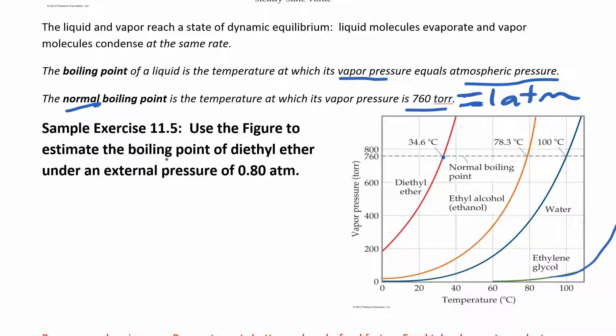So what they want us to do here is use the figure to estimate the boiling point of diethyl ether, but not at the normal boiling point, not at 760 torr, but at 0.8 atm. So atm's not on here, so we're going to have to convert that first. So the first thing you want to do is convert that. So I have 0.8 atm and 1 atm equals 760 torr. So when I work that out, it looks to be about 610 torr. So I'm going to go to around 600 here, draw the line over there, and then drop it down.